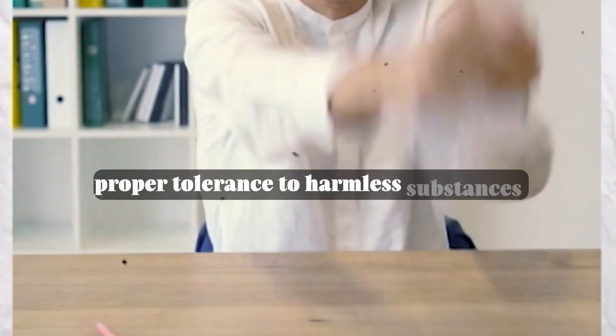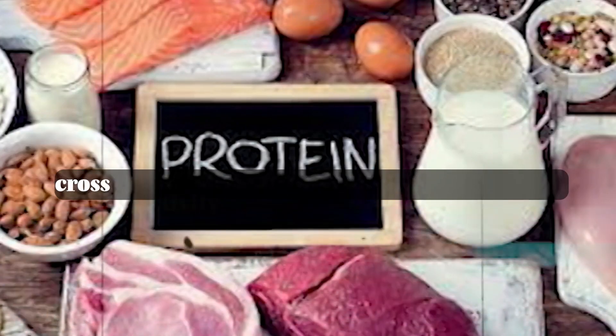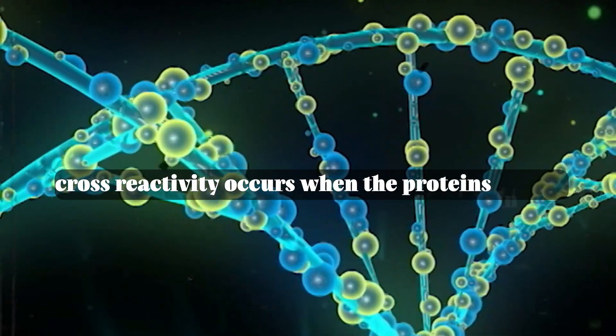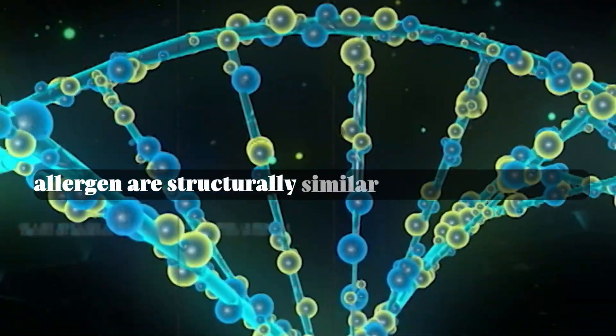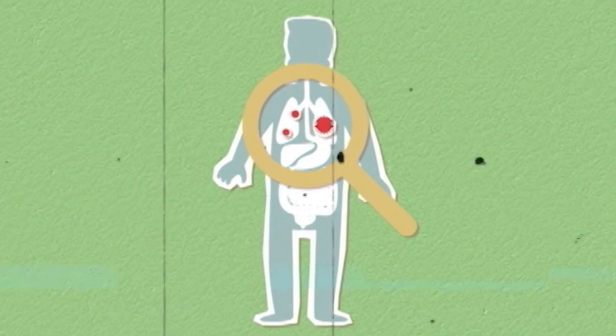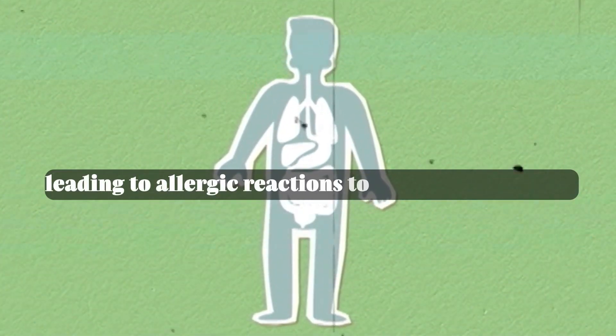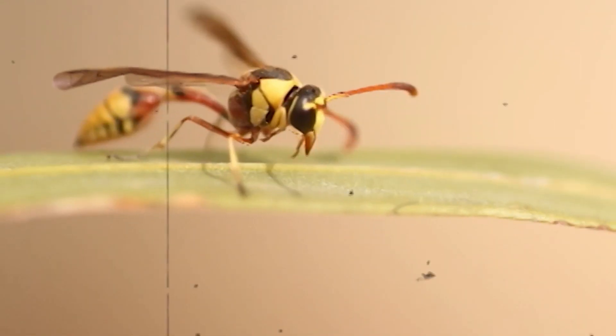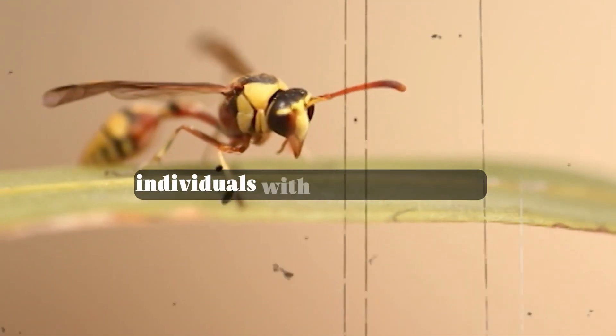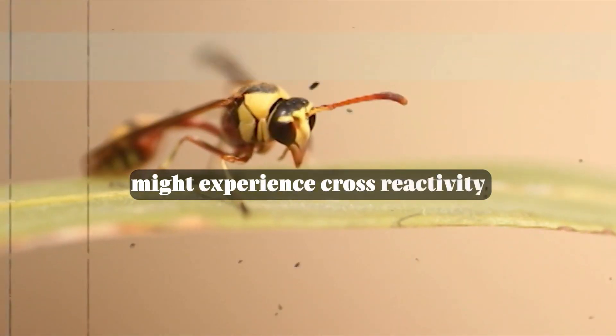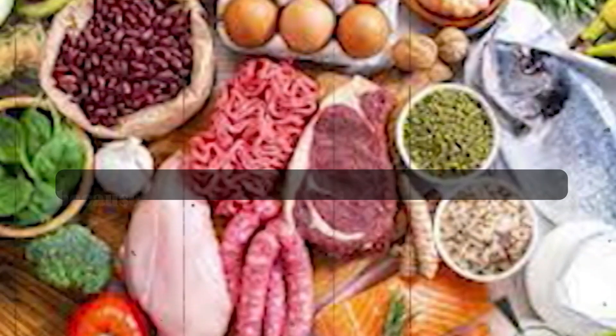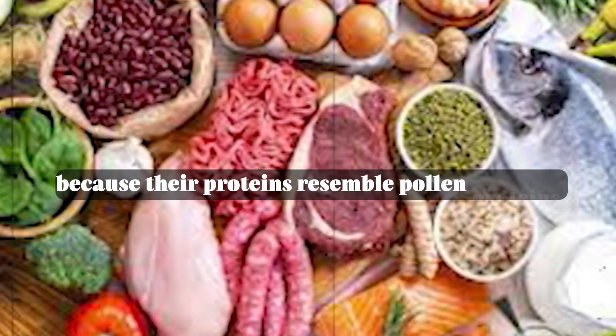Number four: cross reactivity. Cross reactivity occurs when the proteins in one allergen are structurally similar to those in another, leading to allergic reactions to related substances. For example, individuals with a pollen allergy might experience cross reactivity with certain fruits or vegetables because their proteins resemble pollen proteins.